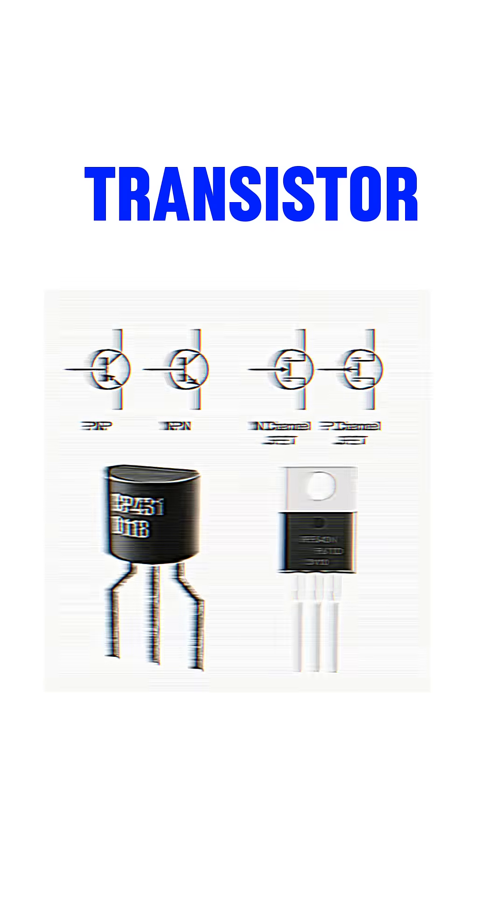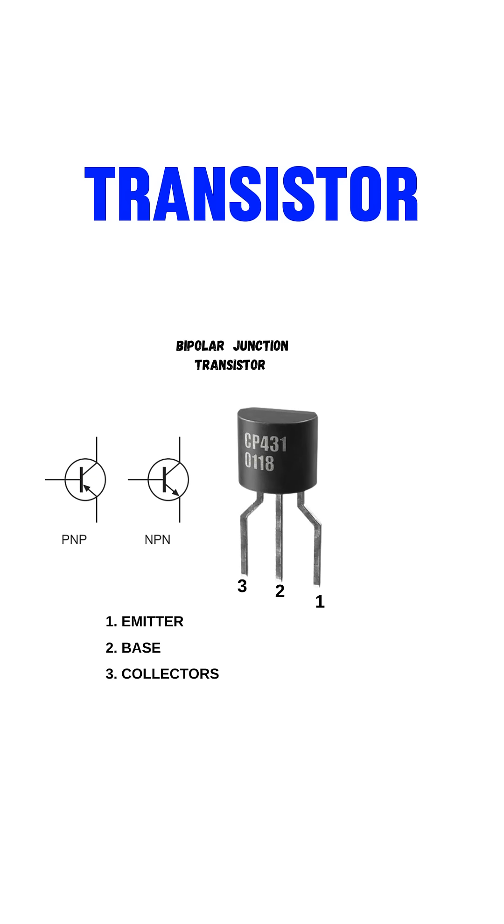Firstly, bipolar junction transistors, which we call BJTs, have two types: NPN and PNP. In an NPN transistor, current flows from the collector to the emitter when a small current is applied to the base. While in a PNP transistor, current flows from the emitter to the collector when a small current is applied to the base.